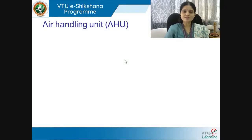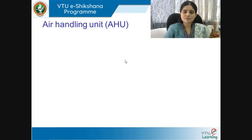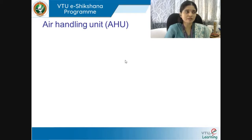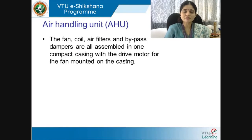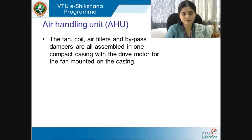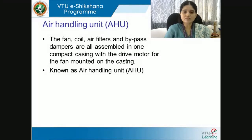The air handling unit — just a quick glimpse or revision of what an AHU is. We have done an elaborate lecture on this. The AHU is the interface between the AC plant room, which has a compressor and condenser, and the space that has to be conditioned. The AHU comprises of the fan, the cooling coil or evaporator, air filters, and bypass dampers, all assembled in a compact casing with a drive motor mounted on the casing.